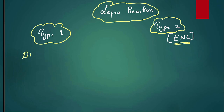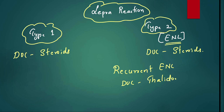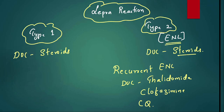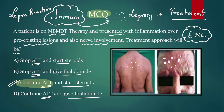Lepra reactions are two types: type one and type two, also called erythema nodosum leprosum (ENL). The drug of choice for type one is steroids — do not discontinue anti-leprosy therapy. Even in type two, steroids are first-line. However, if type two ENL is recurrent, the drug of choice becomes thalidomide. We can also give clofazimine and chloroquine for type two lepra reactions. The answer is to continue anti-leprosy therapy and start steroids.